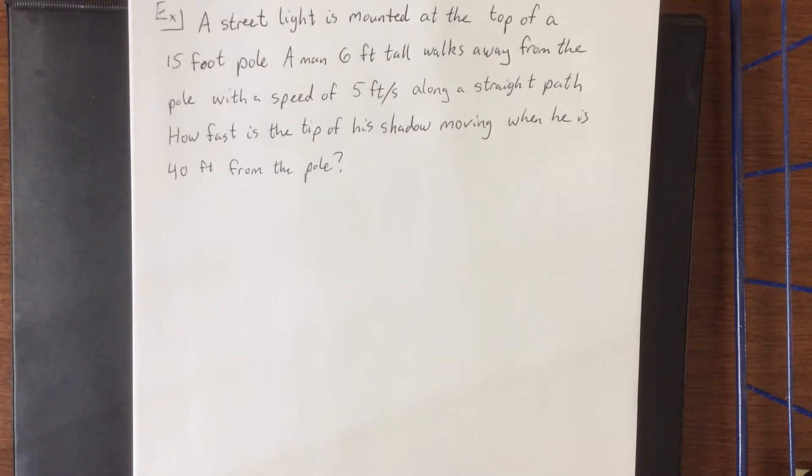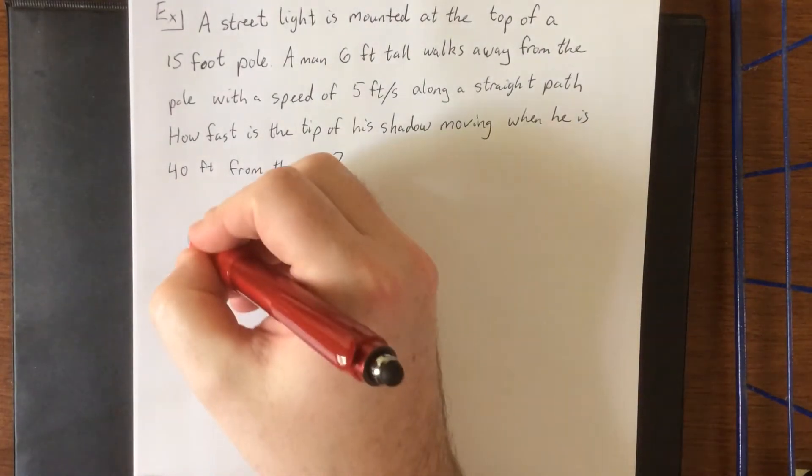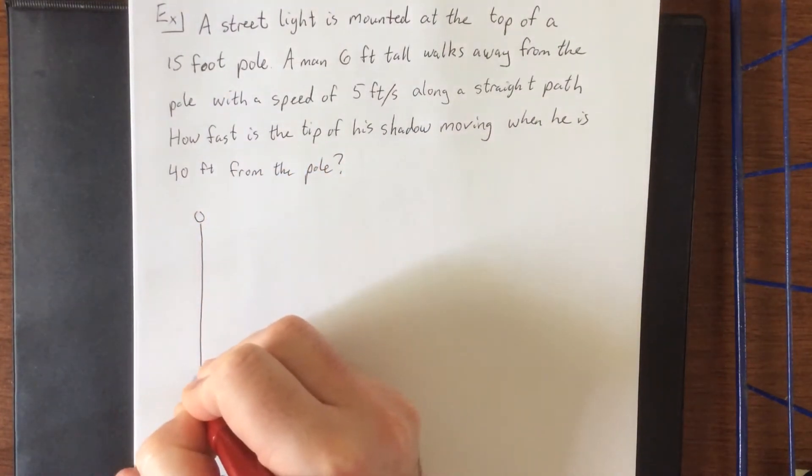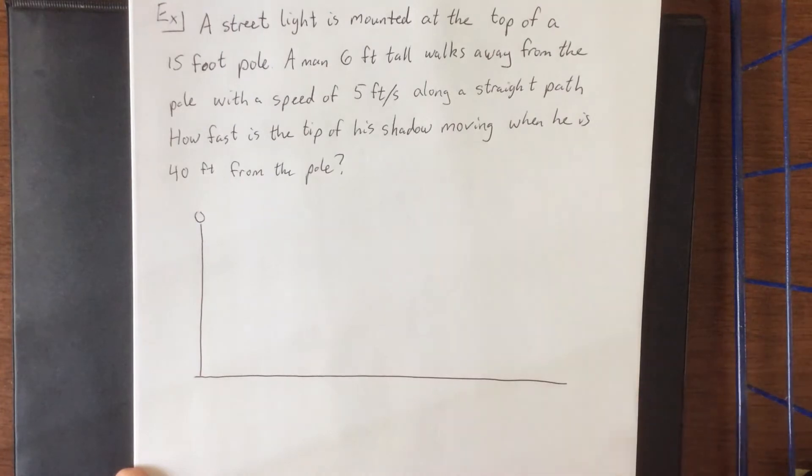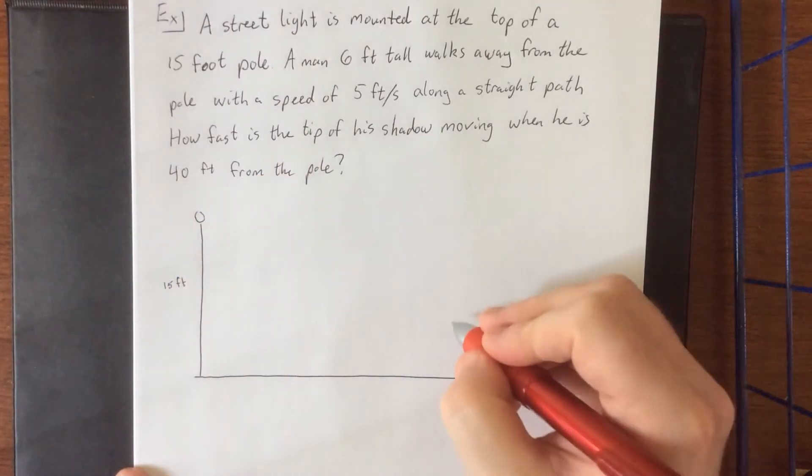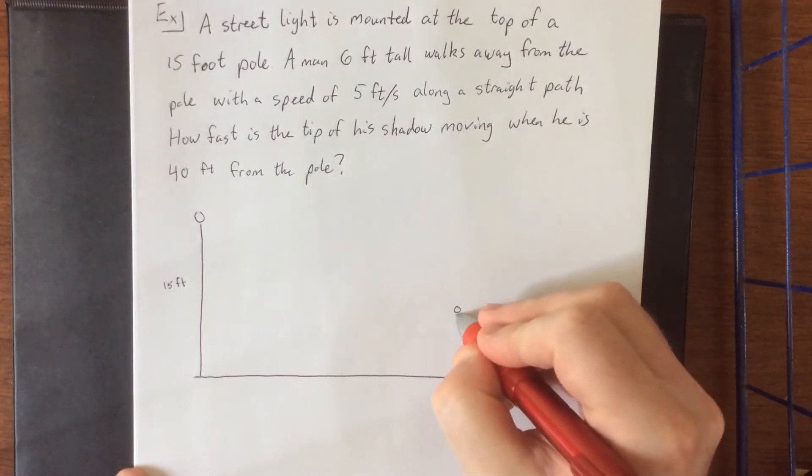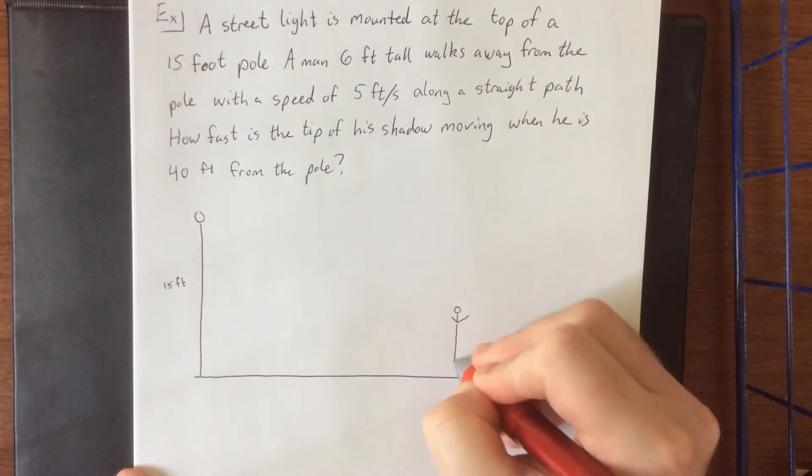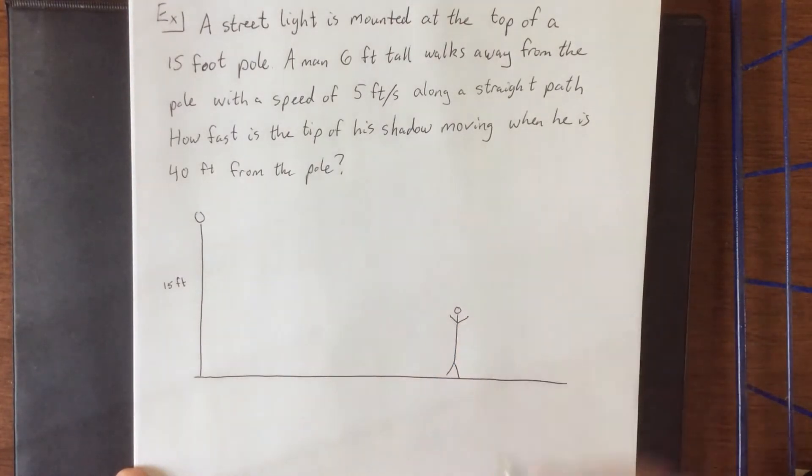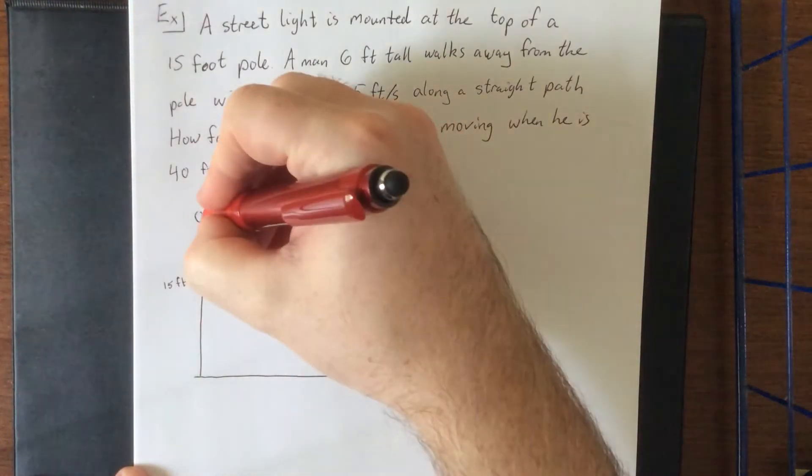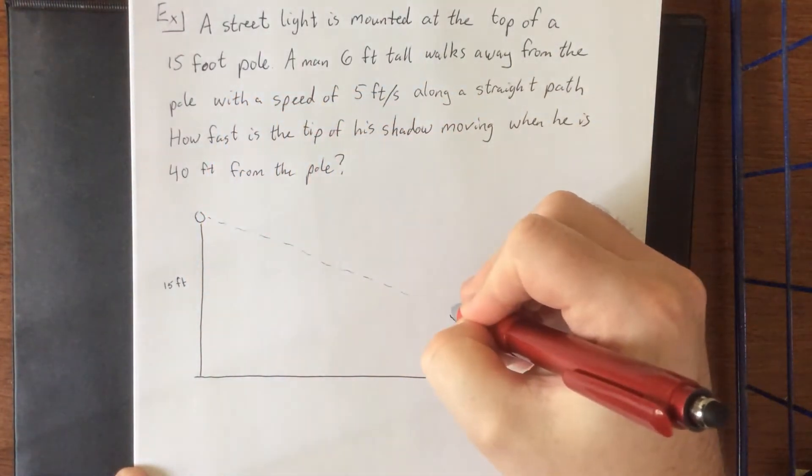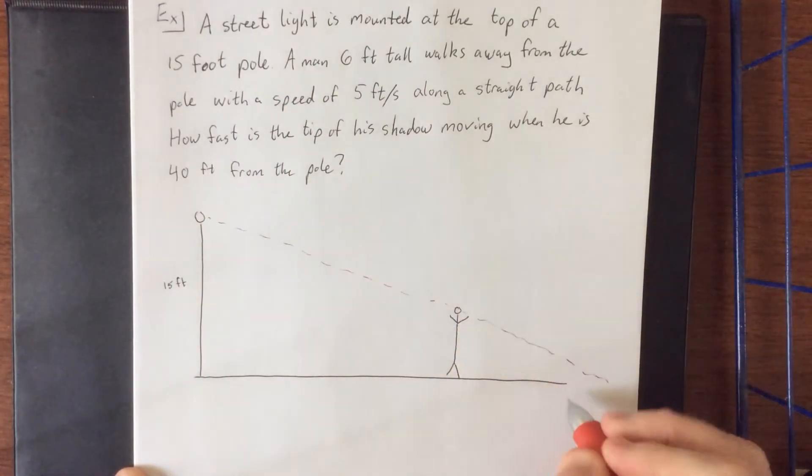Now, something that I find very beneficial in these sorts of problems is to come up with a picture of what's going on. So here is a street light at the top of a pole. The pole is 15 feet tall. That quantity does not change. Then somewhere over here we're going to see a man with a very large head and a very long spine and stumpy little legs, because I am not a very talented artist. Now, light is going to shine directly toward this man and as it hits the man it will cast a shadow onto the ground.